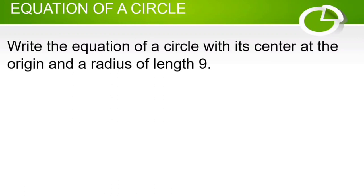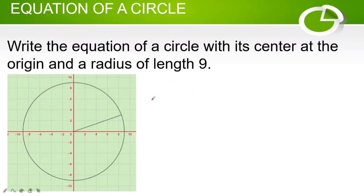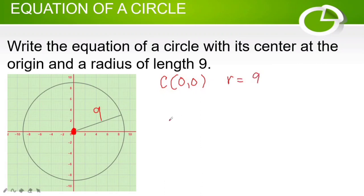Let us illustrate the given problem. According to the problem, the center of the circle is at the origin. The coordinates of the center are (0, 0), and the radius has length 9, so r = 9. When the center of the circle is at the origin, we will use the center-radius form: x squared plus y squared is equal to r squared.